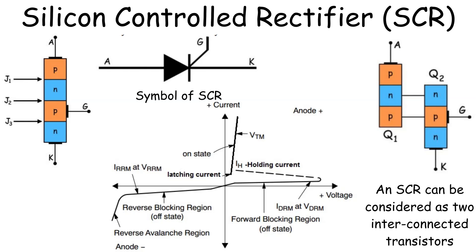Summary. The SCR is a powerful device that can be used to control high power in circuits. By applying a small gate signal, we can control large currents between the anode and cathode, making SCRs ideal for applications like motor control, lamp dimming, and even in rectifiers. I hope this explanation has helped you understand the basics of SCRs, from their structure and symbol to their IV characteristics and transistor model. Thanks for watching, and feel free to ask any questions in the comments below.